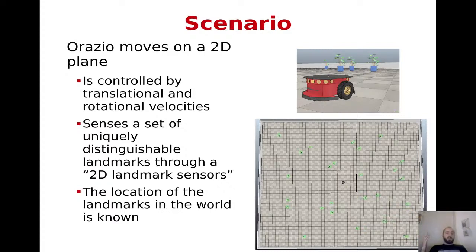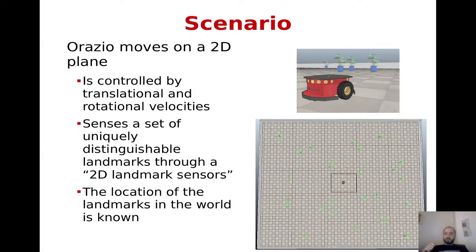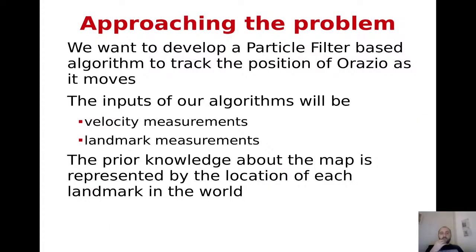We are going to perform data association for the particle filter, which is quite interesting. The location of points in the world is known, so we just have to understand where the robot is in this environment. Approaching the problem, what are the differences with the common filter?